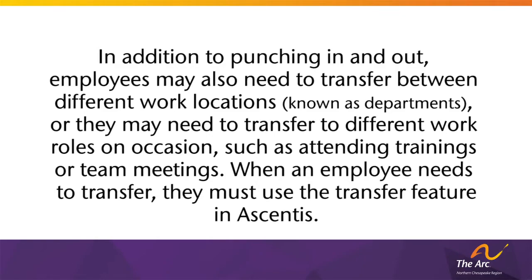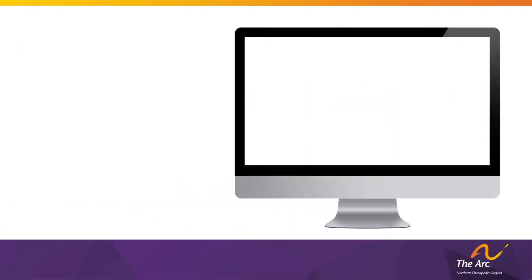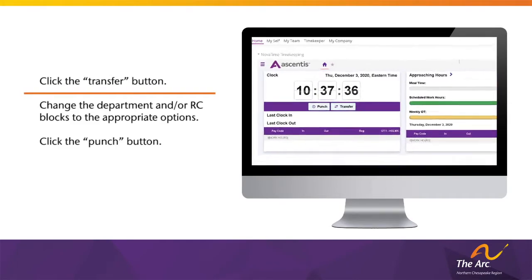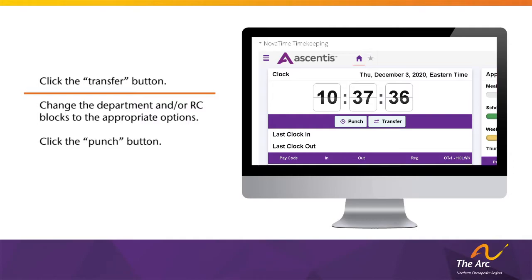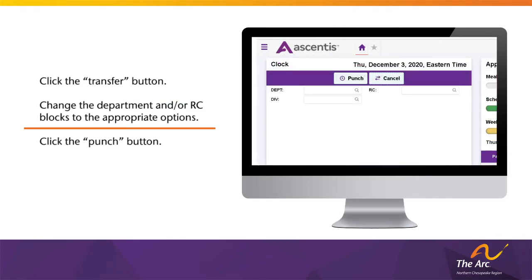In addition to punching in and out, employees may also need to transfer between different work locations, known as departments, or transfer to different work roles — such as attending trainings or team meetings. When an employee needs to transfer, they must use the transfer feature in Ascentus. On a desktop computer, log in to Ascentus and click the Transfer button, which is located beside the Punch button. Note the top two text boxes that appear: Department and RC. The Department block refers to your work location — by default your normally scheduled work location — and the RC block refers to a role change, with your normally scheduled work role listed by default.